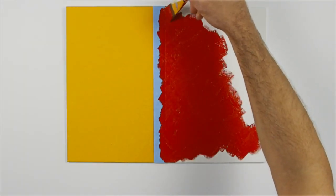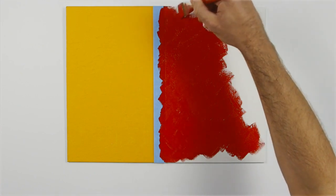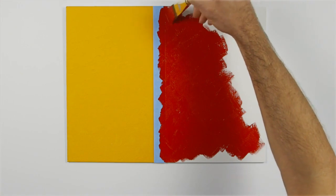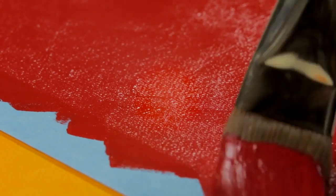Hello. Today I'm going to show you a way of achieving a Sgraffito effect using acrylic color and modeling paste. Sgraffito is a form of decoration made by scratching through a surface to reveal a lower layer of a contrasting color.